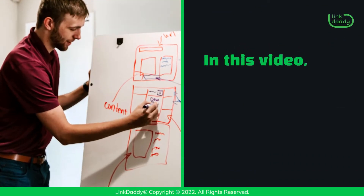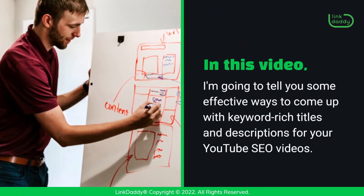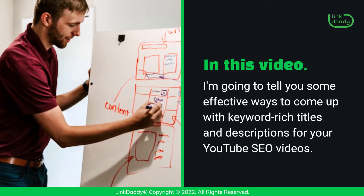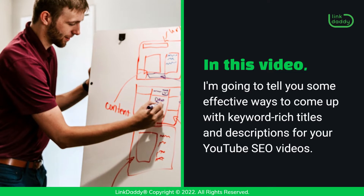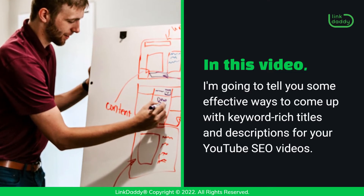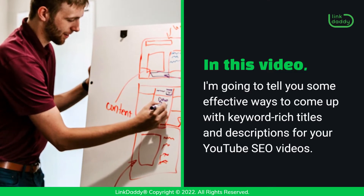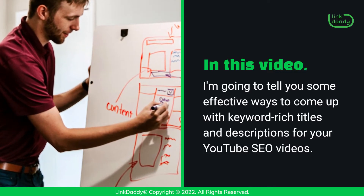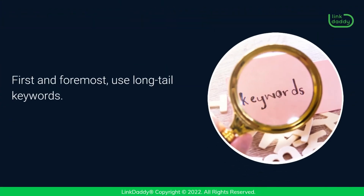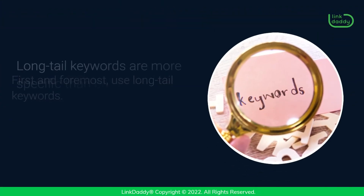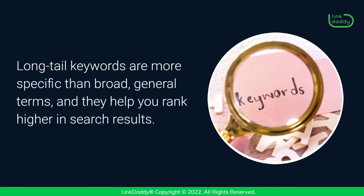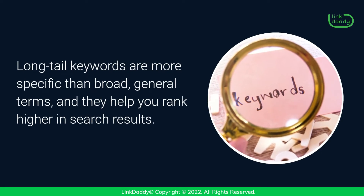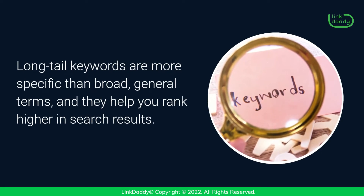In this video, I'm going to tell you some effective ways to come up with keyword-rich titles and descriptions for your YouTube SEO videos. First and foremost, use long-tail keywords. Long-tail keywords are more specific than broad, general terms, and they help you rank higher in search results.